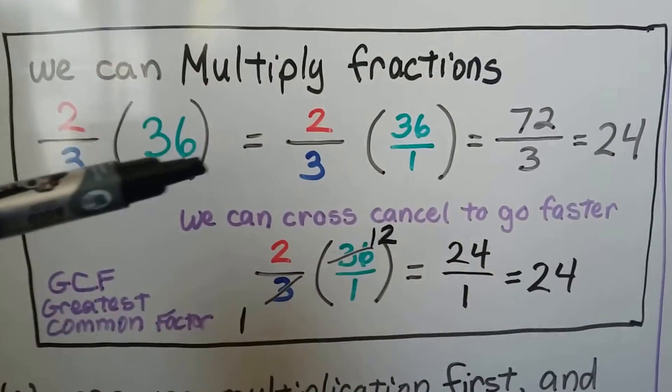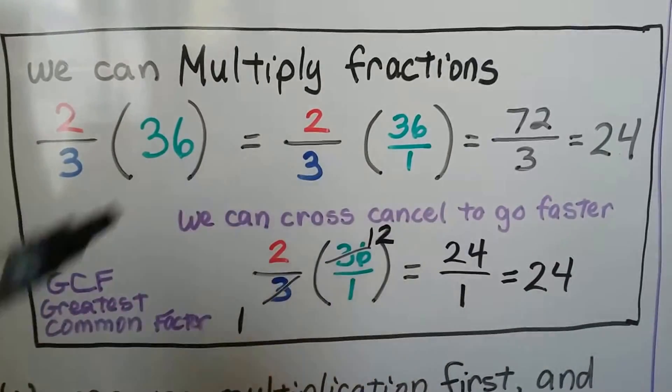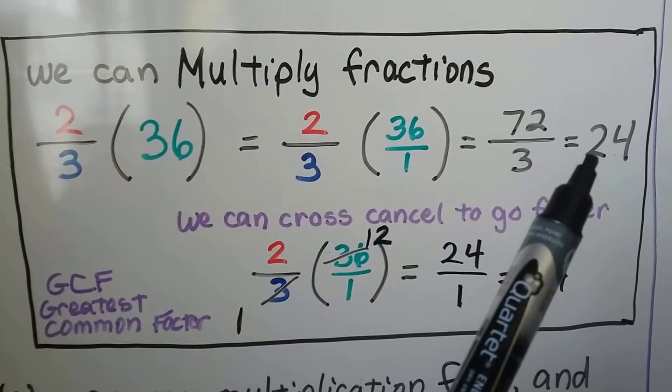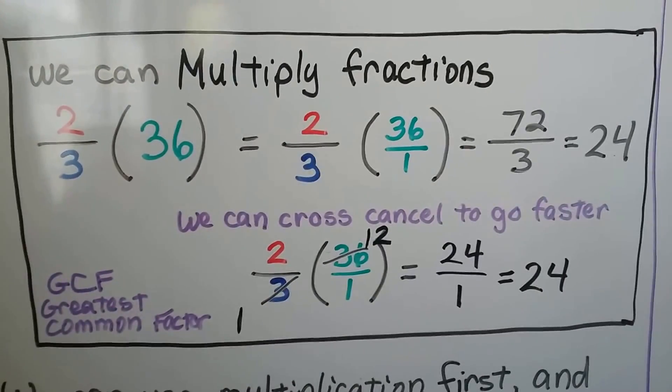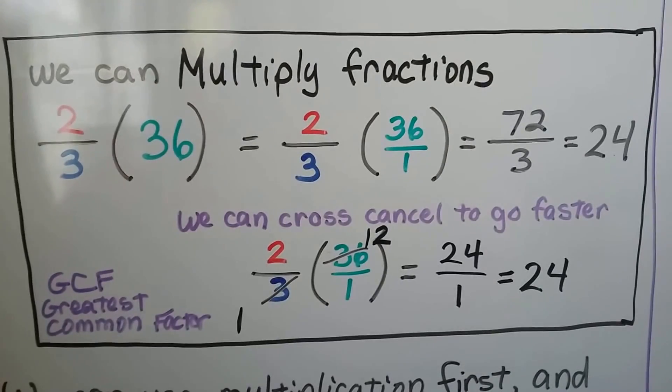Two times 36 is 72. Three times 1 is 3. Seventy-two-thirds reduces down to 24. Now, we can also do the cross-canceling I was talking about.